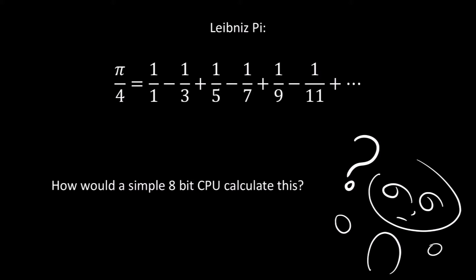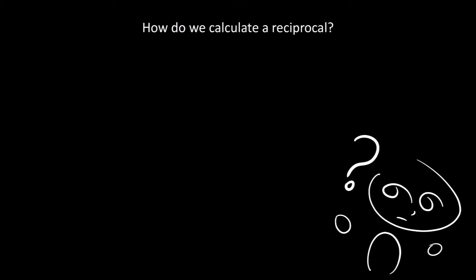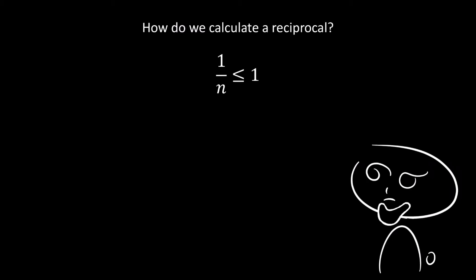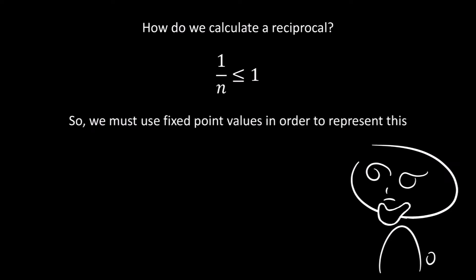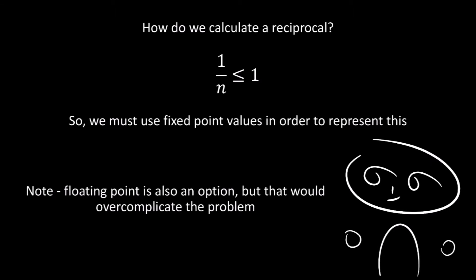How would an 8-bit simple CPU calculate this? First, how do we calculate a reciprocal? Note that for 1 divided by n, where n is an odd number, that will always give you a value less than or equal to 1. This means we cannot easily represent that using normal binary integers, so we must use fixed point values. We could also use floating points, but that would overcomplicate the problem and make it slower on a simple 8-bit CPU.